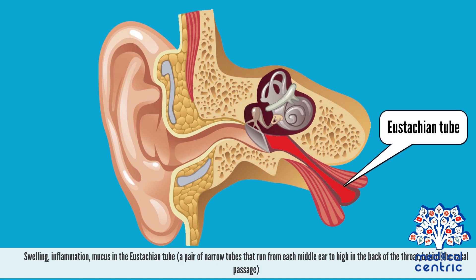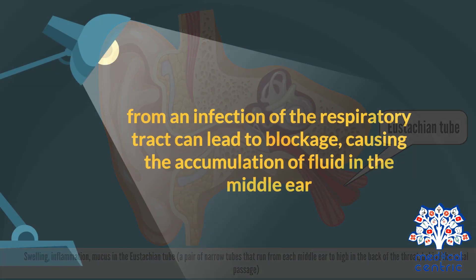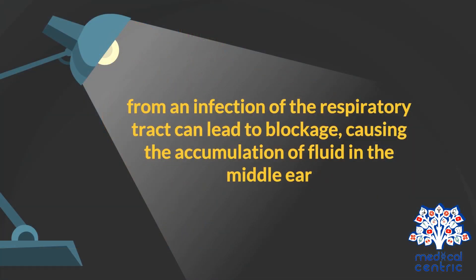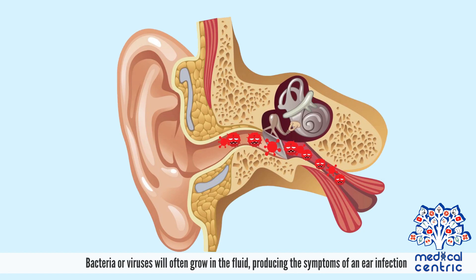Swelling, inflammation, and mucus in the Eustachian tube — a pair of narrow tubes that run from each middle ear to high in the back of the throat, behind the nasal passage — from an infection of the respiratory tract can lead to blockage, causing the accumulation of fluid in the middle ear. Bacteria or viruses will often grow in the fluid, producing the symptoms of an ear infection.